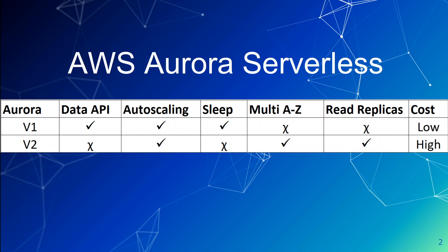AWS released v2 to address these pain points. In v2, you can have multi-AZ and read replicas, so you don't have to worry about downtime due to failure in a zone. However, you cannot have Data API or the sleep feature in v2, so you need to be wary of that. There might be some more cost involved because there is no sleep option, but your application also doesn't have to worry about the cold start.